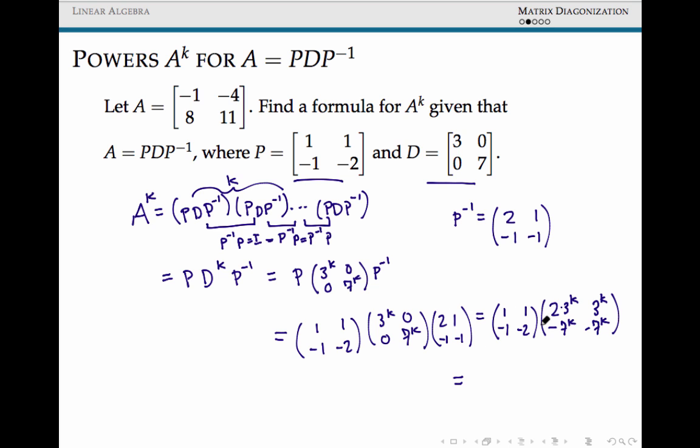Our closed formula for our power A to the k, then, is we'll be able to collect it just from looking at all of these terms. So this is 2 times 3 to the k, minus 7 to the k, minus 7 to the k, negative 2 times 3 to the k, plus 2 times 7 to the k.